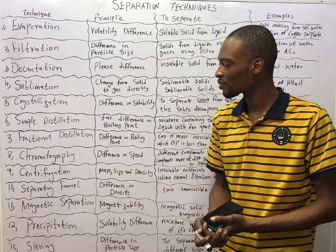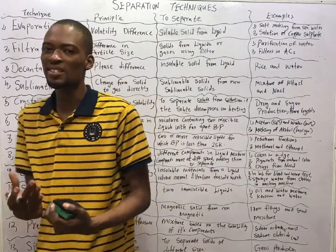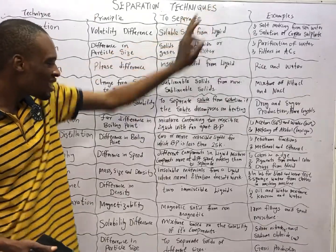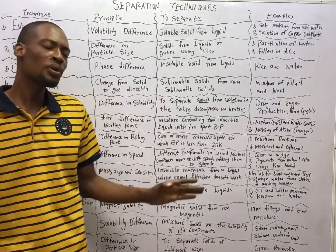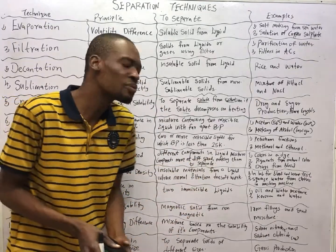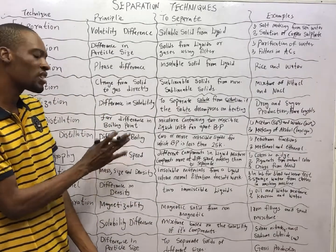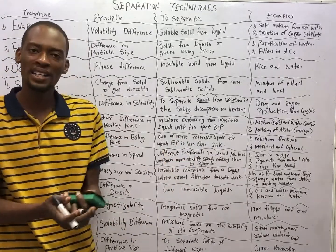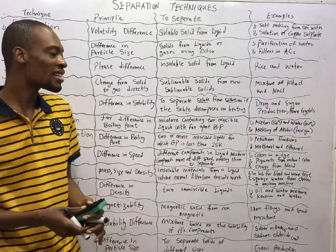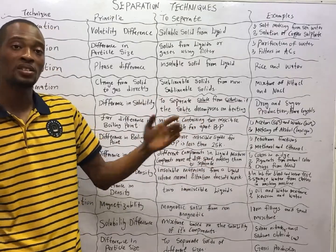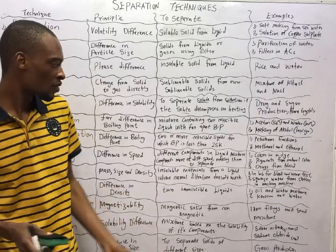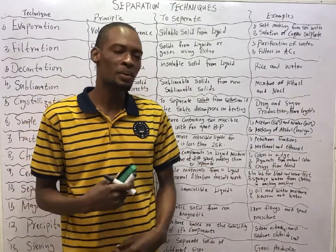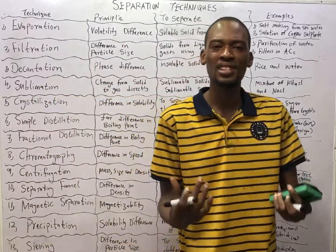Chromatography works based on the principle of difference in speed, or difference in the rate of migration. It is used to separate different components in a liquid mixture. The components move at different speeds as they move through the column — there is a stationary phase and a mobile phase, and in the mobile phase they move at different rates, causing them to separate. Examples: separating colors in a dye, pigments from natural colors, and drugs from blood.